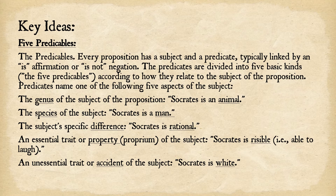An essential trait or property — proprium in Latin — of the subject, as in 'Socrates is risible,' meaning he's able to laugh. And finally, the fifth predicable is an unessential trait or accident of the subject, as in 'Socrates is white.'